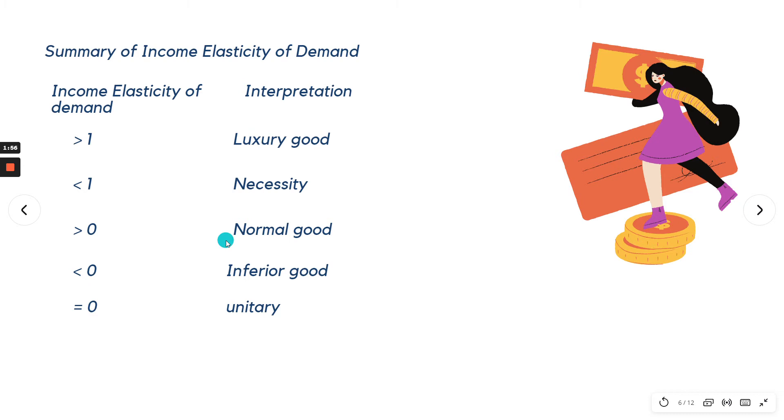To represent the answer to the equation: if the answer is greater than one, the product is called luxury product. If it's less than one, we call it necessity, meaning it's something that you cannot live without, it's a necessary product, one of your needs.